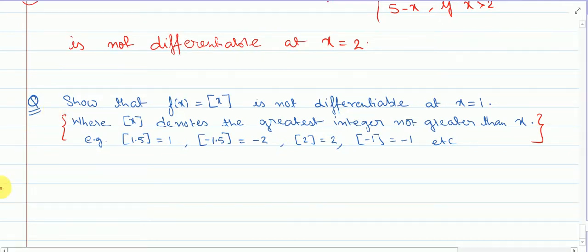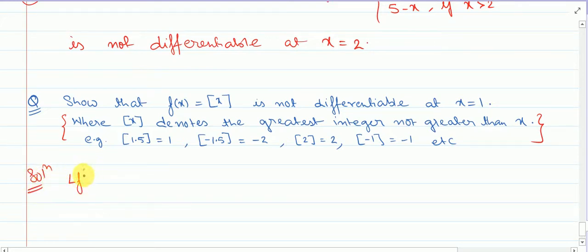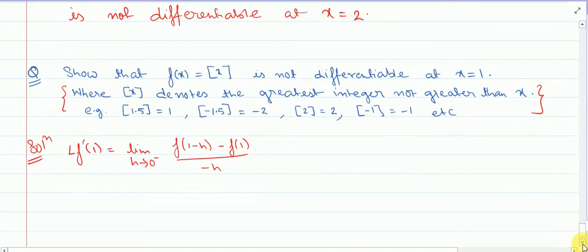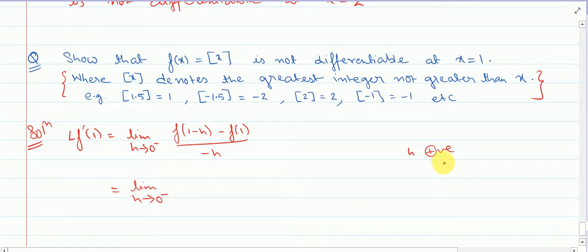For this we will find the left-hand derivative and right-hand derivative. Left-hand derivative at 1: limit h tends to 0, f of 1 minus h minus f of 1, upon minus h. Here h is positive and close to 0, so 1 minus h means you get 0-point-something.